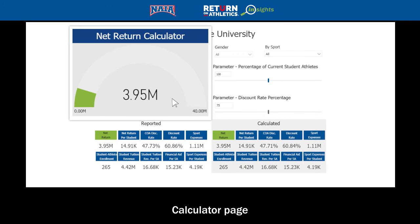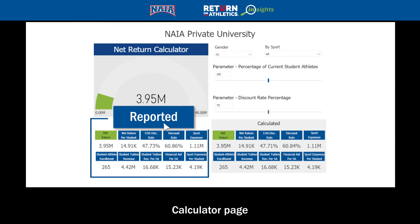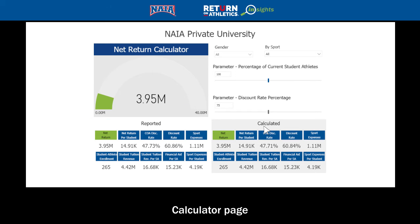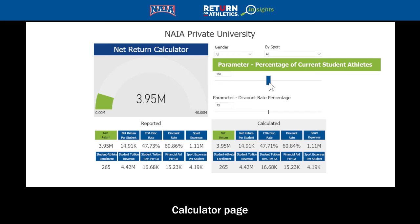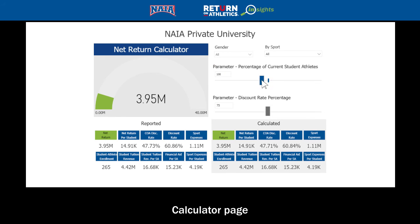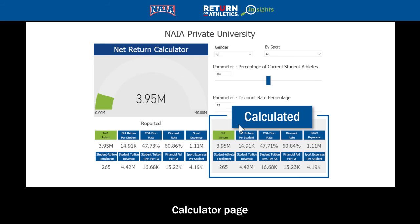In the large box, you see what your net return calculation would be based on the data you've provided. You also see your reported values in the bottom left of the screen and your calculated values in the bottom right. In the middle, there are two sliders — one for the number of student athletes and one for the discount rate. You can adjust these by either dragging the blue bar or typing a value into the text box. Once you adjust the sliders, the net return calculation updates as do the calculated values.